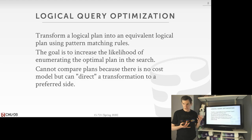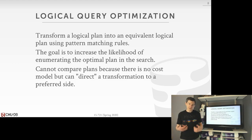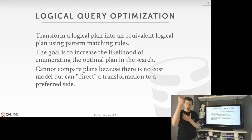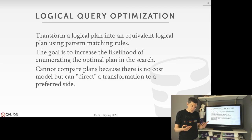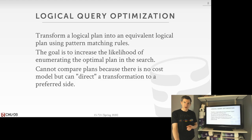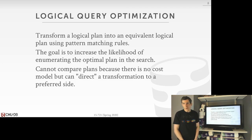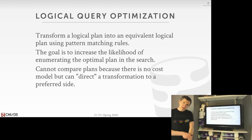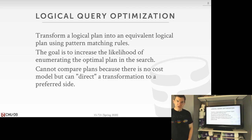There are two types of optimizations: logical and physical. Logical optimizations are transformations we can apply to the logical query plan from the binder, based on matching patterns we see in the logical query plan. We can make changes so that when we do plan enumeration in the physical query optimization step, we can potentially find the optimal plan more easily. It's not always guaranteed that these changes will ensure we find the optimal plan, but if we know a little about how our optimizer works, we can make changes to prepare ourselves accordingly.